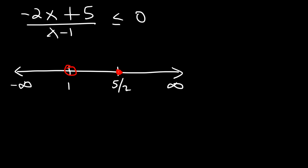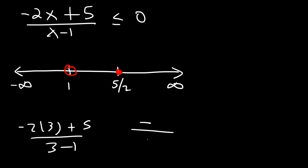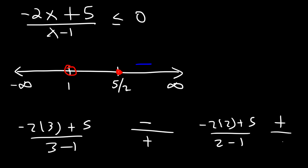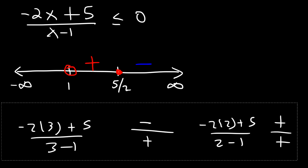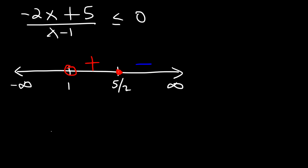We have a closed circle at 2.5 and an open circle at 1. Let's test the points. For a number greater than 2.5, try 3: negative 2 times 3 plus 5 over 3 minus 1 gives negative 6 plus 5, which is negative, over a positive — negative result. For a number between 1 and 2.5, try 2: negative 2 times 2 plus 5 over 2 minus 1 gives negative 4 plus 5, which is positive, over a positive — positive result. For the region less than 1, try 0: the numerator is just 5 and the denominator is negative 1, giving a negative result.